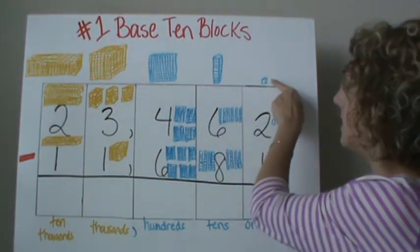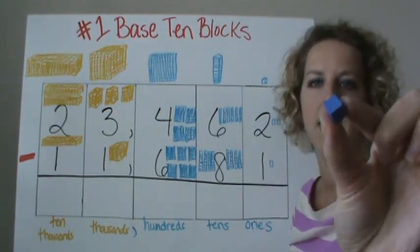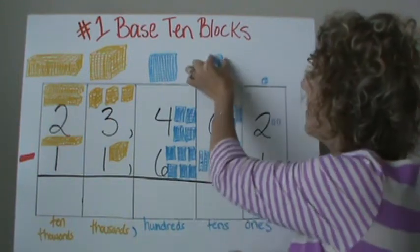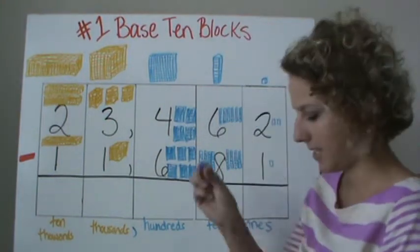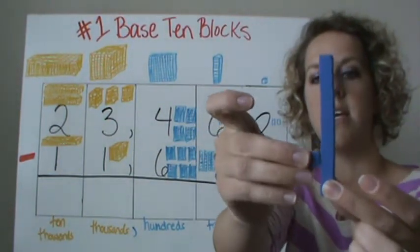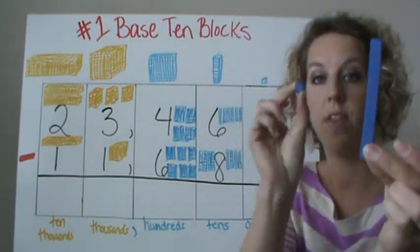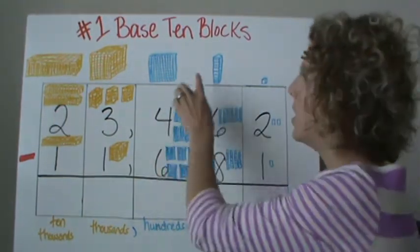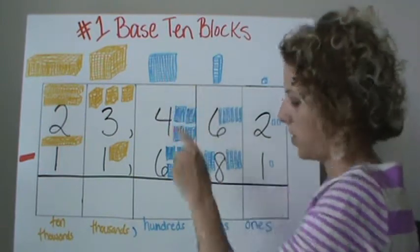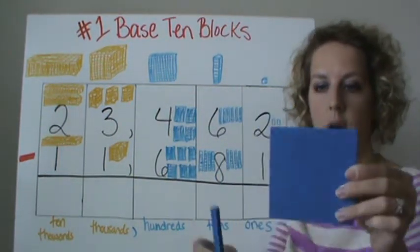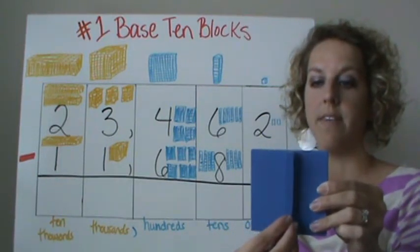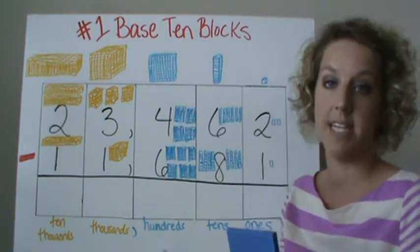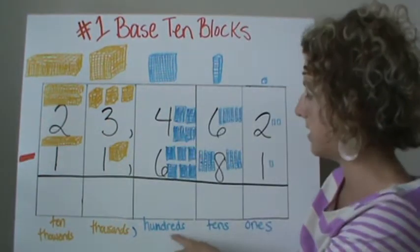If we look at the ones place, this little block — with your manipulative, this little tiny block represents one. This rod has ten of these ones in a ten rod. Then you have your — well, it looks kind of like a waffle. You have ten of these rods that fit into the waffle. So the waffle has ten rods. We know that there are ten in here, so ten times ten is a hundred. This represents the hundreds place.